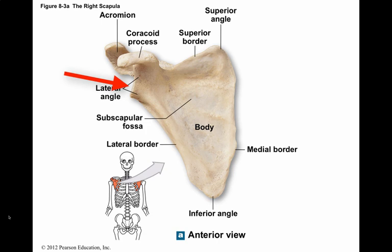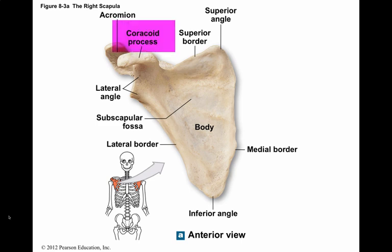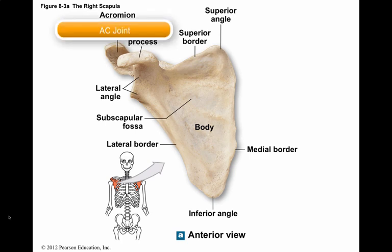At the glenoid cavity, the scapula articulates with the head of the humerus. The anterior surface of the body of the scapula is smooth and concave; this depression is called the subscapular fossa. The two large processes that extend from the scapula just superior to the head of the humerus are called the coracoid process, which is smaller, and the acromion, which is larger. If you run your fingers along the superior surface of the shoulder joint, you will feel this process. The acromion and the clavicle articulate at the acromioclavicular joint.